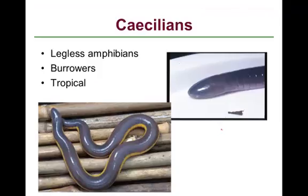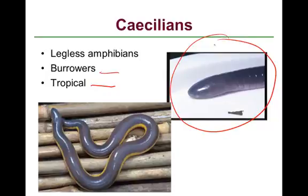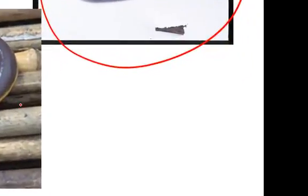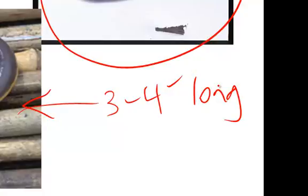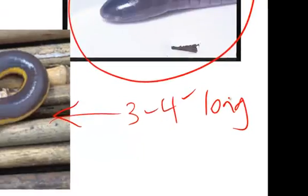The third group of amphibians is the caecilians — legless, burrowing forms that live in heavily vegetated areas of the tropics, so we don't know very much about them. They can look like an earthworm, but they have an eye spot, a nostril, and a hinged jaw. They can be three to four feet long, and they are all predatory.